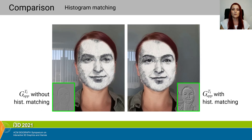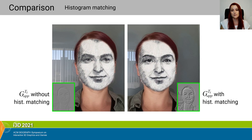We also tested the influence of histogram matching on the quality of identity preservation, and the difference is significant. On the left, the histogram of the target's appearance guide is not matched to the histogram of the style's appearance guide. On the right, the histograms are matched.